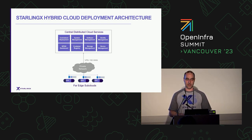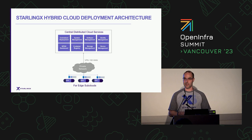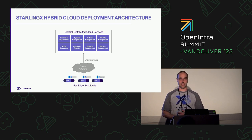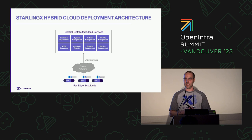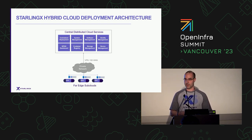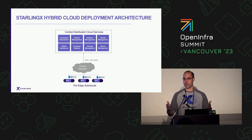Once we get into day two operations we have to have full lifecycle management, including things like software updates and upgrades. When looking at a mass deployment we need to manage individual systems as well as the complete distributed cloud. There are also shared services in this hierarchy — things like a container registry hosted in a hierarchy for scale, rather than pulling from the same private or public registries. We use regional data centers to provide a container registry for subtending subclouds, extending to identity management, booting, and installation.